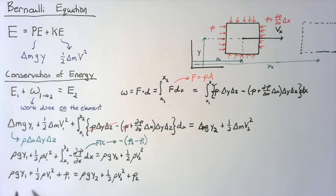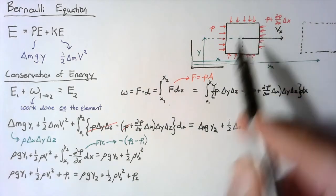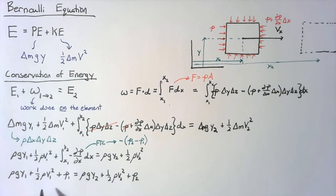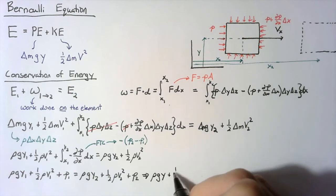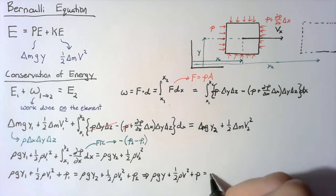Another way of saying this is that for any state, if we're tracking this fluid particle, this is going to end up being constant. So we can say that rho g y plus one-half rho v squared plus p is a constant.